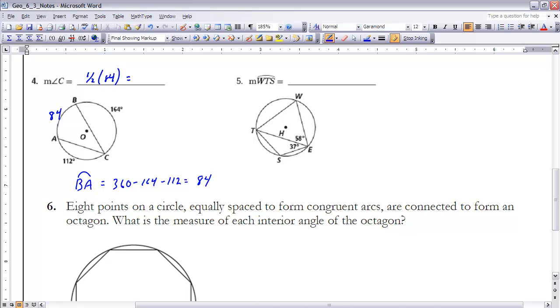I also know that the measure of angle C has to be equal to one half of 84. Therefore, the measure of angle C would have to be 42 degrees. At this time, if you could pause the video and see if you can answer number 5, and then go ahead and turn the video back on, and I'll do number 5 for you.